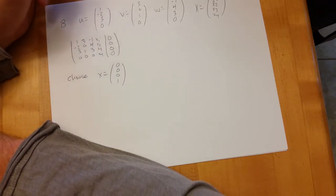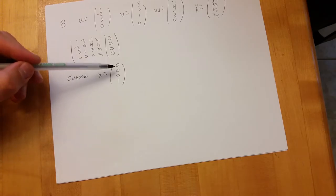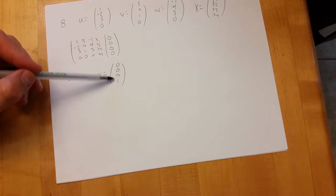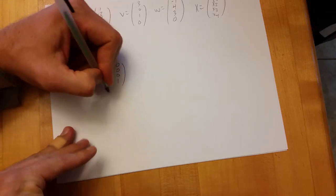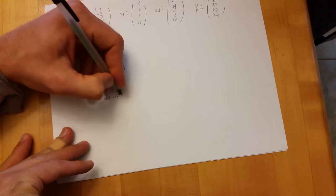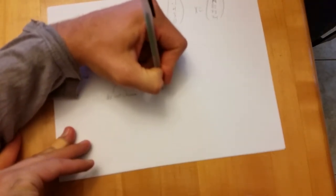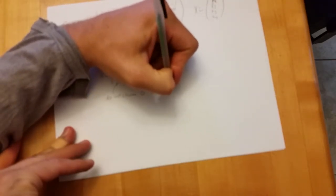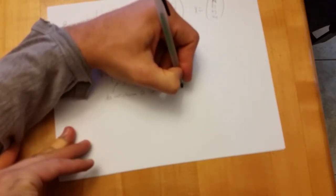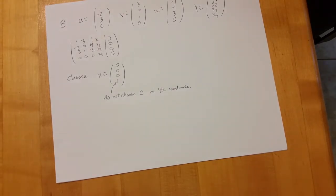Now the full correct answer, if you want to say what possible answers are there in this particular scenario, I can pick anything up here as long as I don't go zero in the last coordinate. So do not choose zero in the fourth coordinate, and you're good to go. The easy choice is put one there and zeros everywhere else.